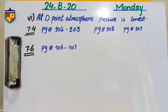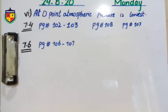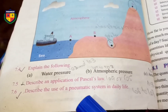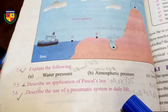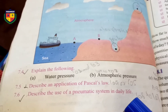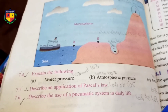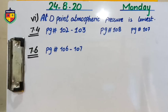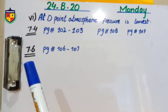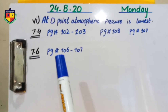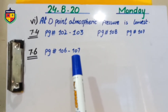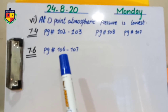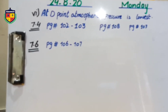Question number 7.6: Describe the use of a pneumatic system in daily life. For this answer, refer to page numbers 106–107. All the uses of the pneumatic system in daily life are covered on pages 106–107.